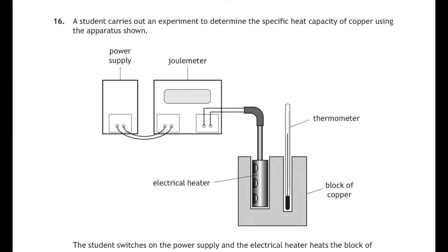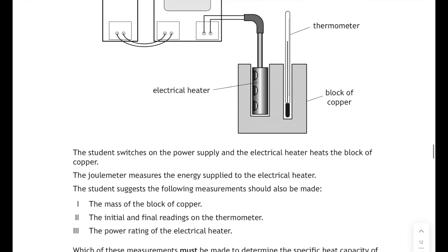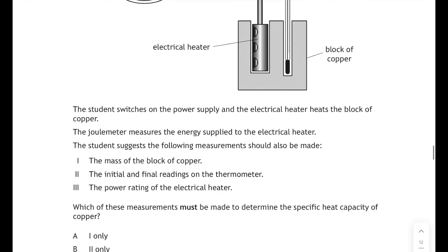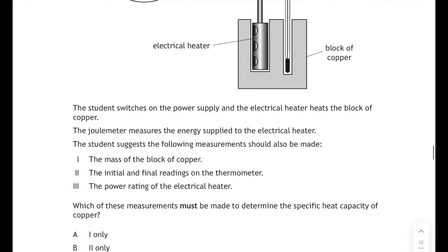So without more ado, let's jump straight in where we left off. That was question 16 on properties of matter, and this is a question on heat energy. A student carries out an experiment to determine the specific heat capacity of copper using the apparatus shown below. The student switches on the power supply and the electrical heater heats the block of copper. The joulemeter measures the energy supplied to the electrical heater.